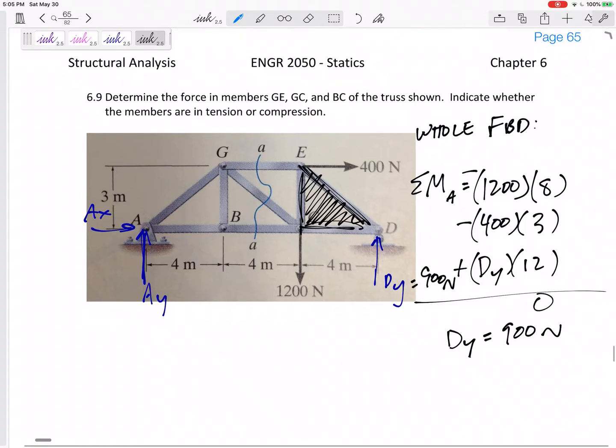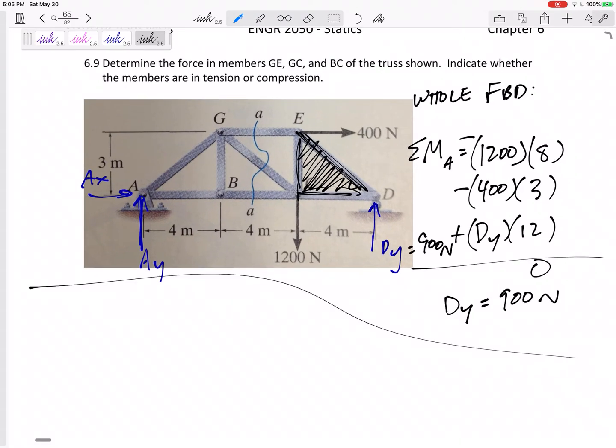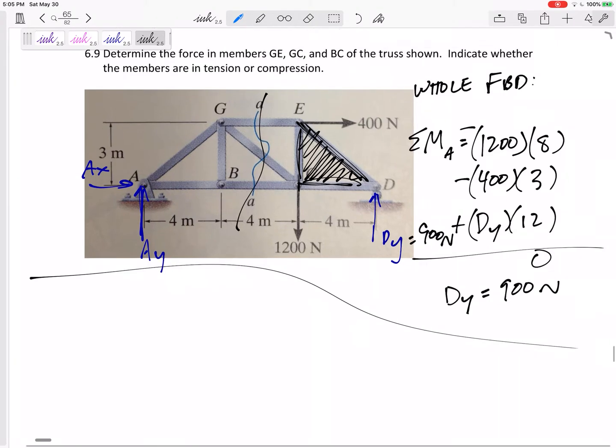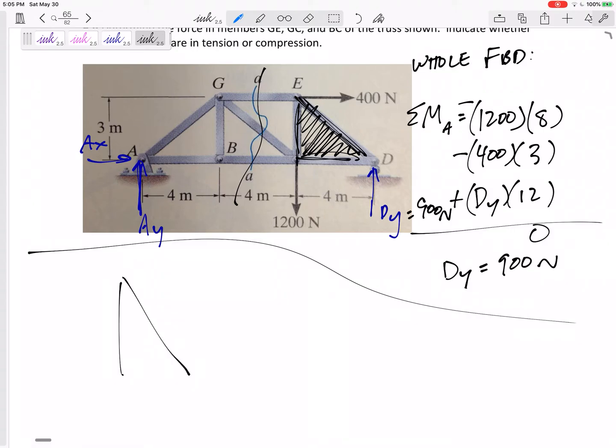D_Y is 900, and I'm going to stop there and I'm not even going to solve for A_X and A_Y. Now I'm ready to cut it and look at the right half of it. So let me draw this. Let me cut it.